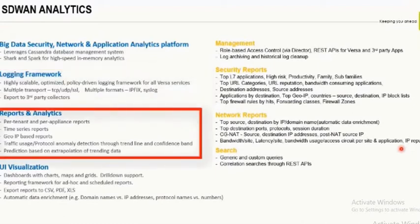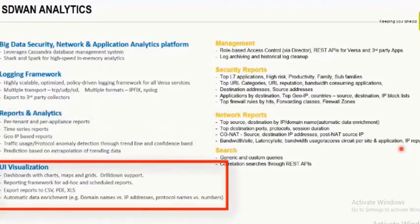Various kinds of reports are available — including per-tenant, per-appliance, time series, geolocation-based, traffic utilization, and protocol anomaly detection reports. You can predict and tell the customer about network utilization spikes and when it's time to upgrade link bandwidth. These reports can be downloaded in CSV, PDF, and XLS formats. There is also an option to send out email reports on a monthly basis. The system leverages REST APIs heavily for collecting interface graphs from analytics and presenting them in the portal.